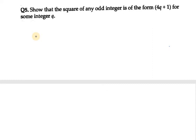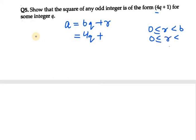In this case we'll be taking a equals bq plus r, that is Euclid's division lemma. In this case my b is 4, and we know that r lies between 0 and b. So r lies between 0 and 4, meaning r can take four values: 0, 1, 2, and 3.